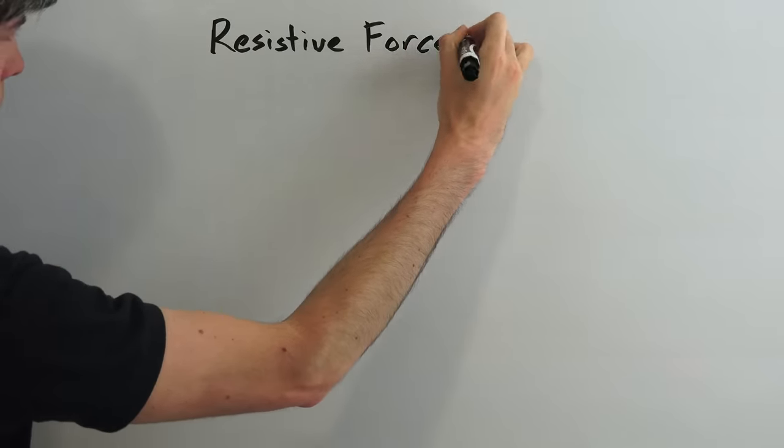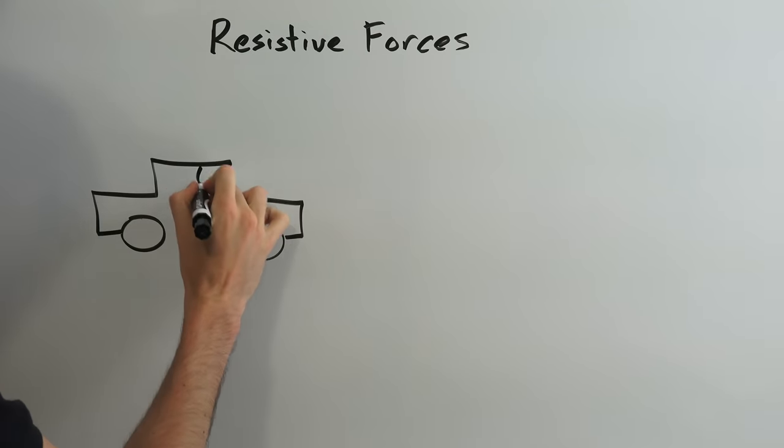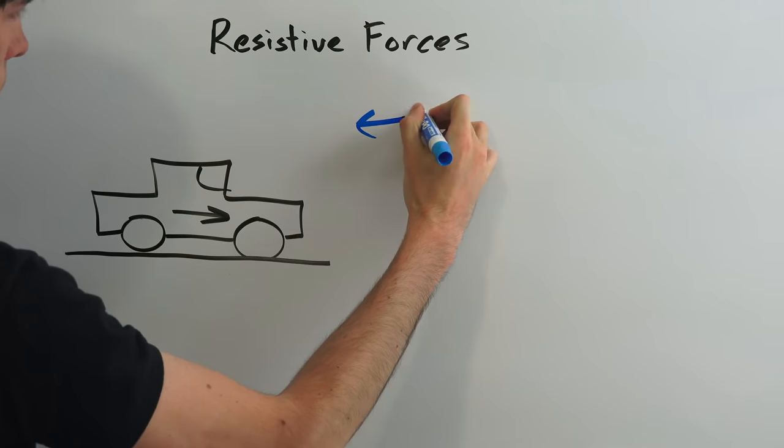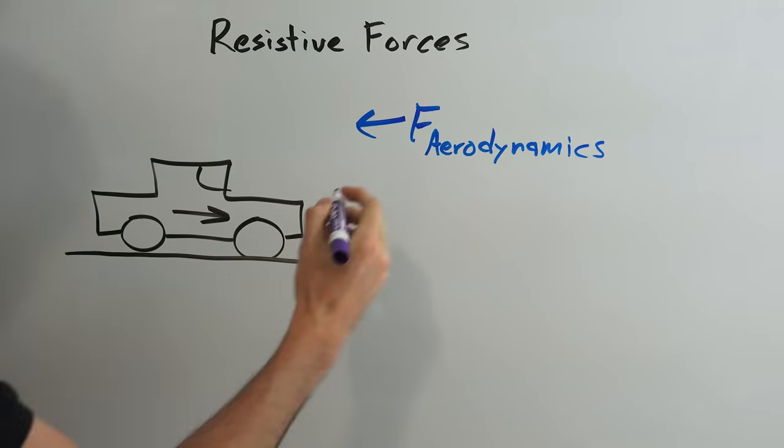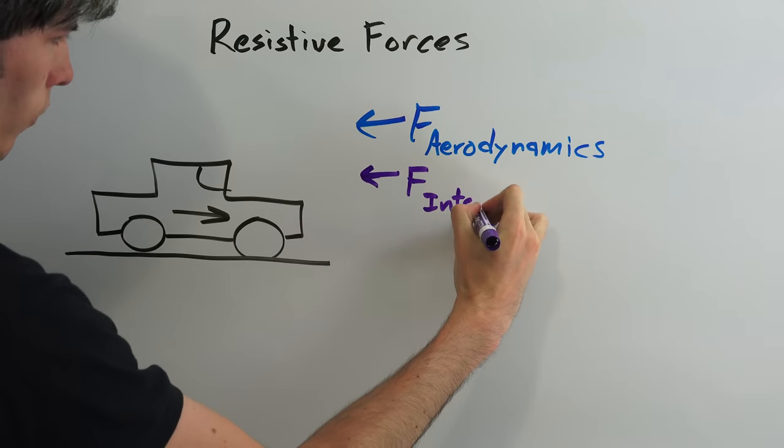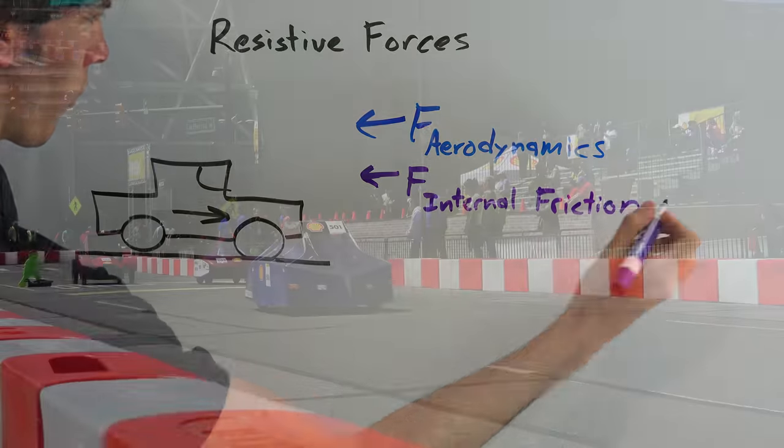When it comes to designing for efficiency, there are five major forces which a vehicle needs to overcome. There's the resistive force caused by aerodynamics as a result of drag and possibly wind. There's the internal friction of the vehicle such as the engine, transmission, suspension, brakes, and so on.